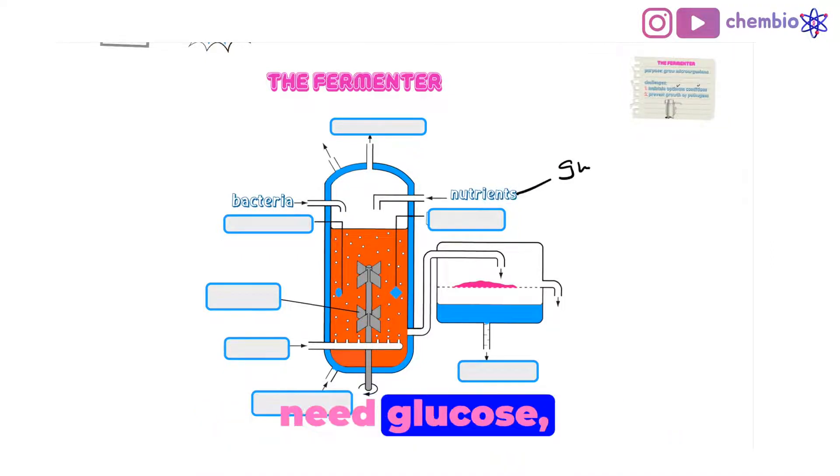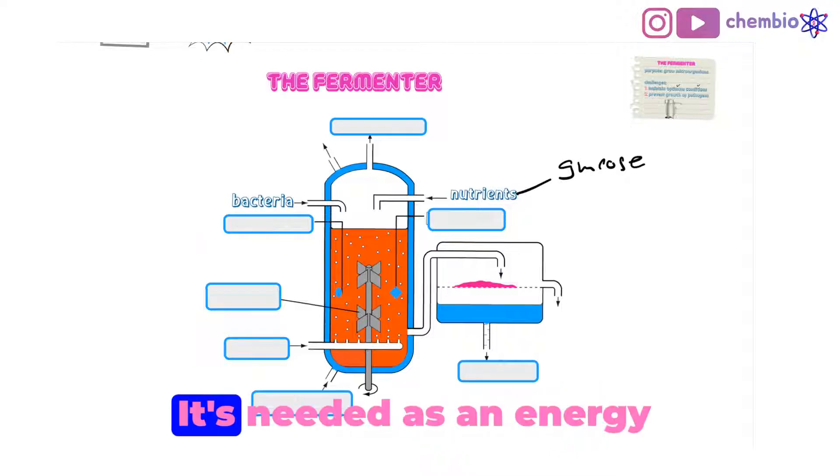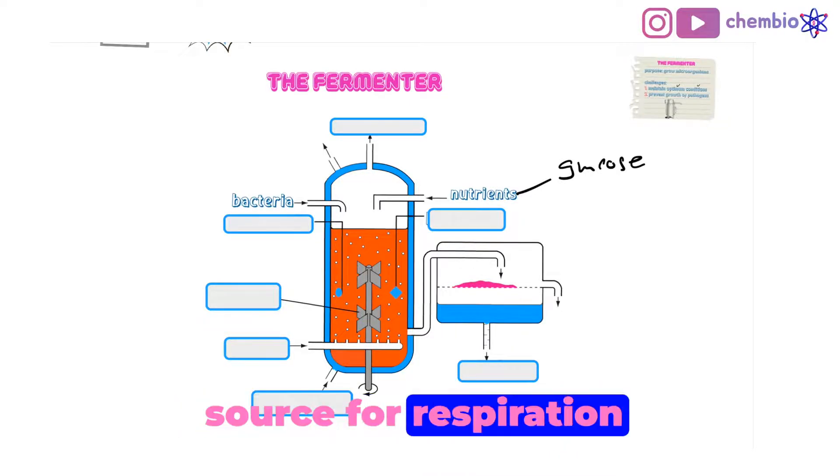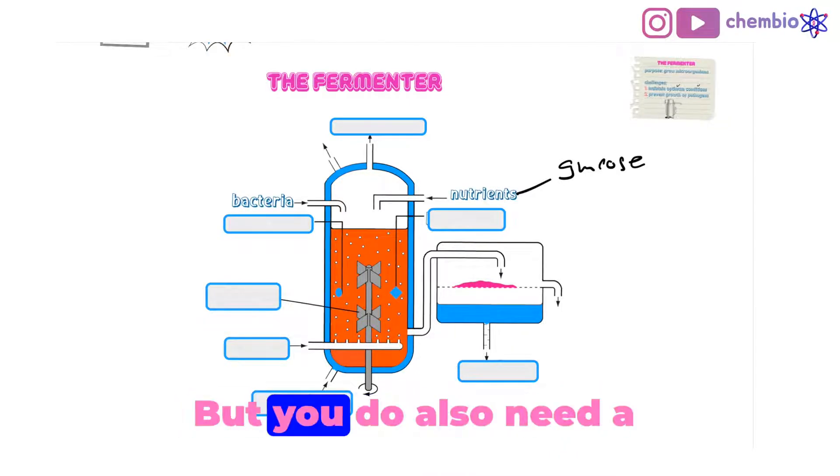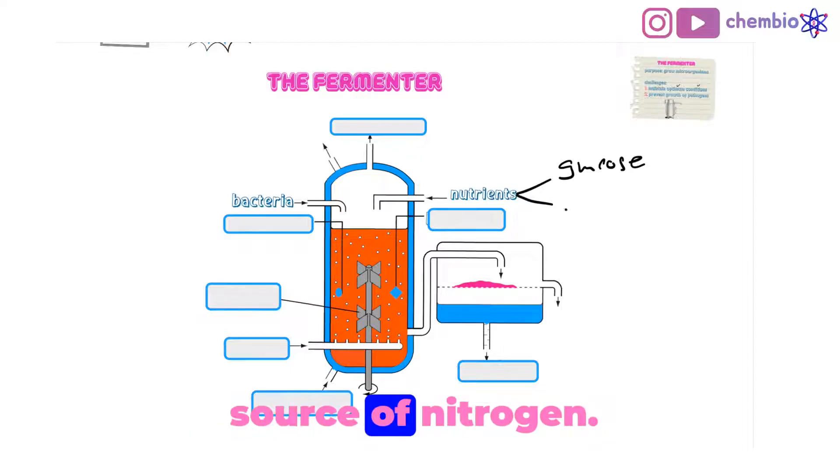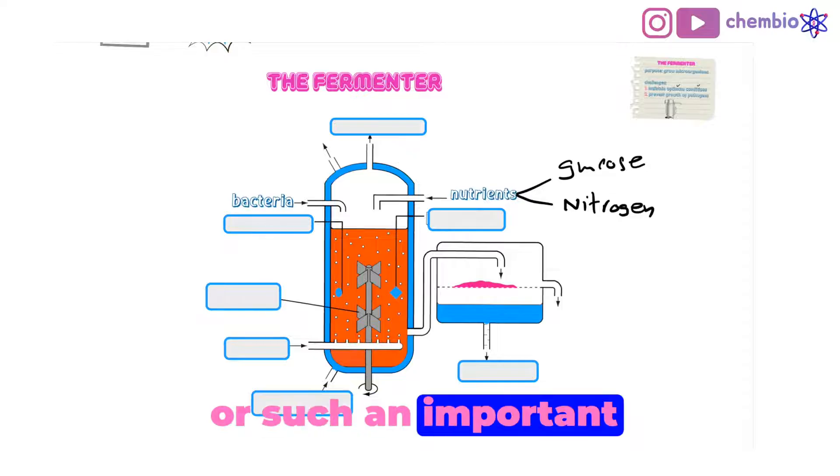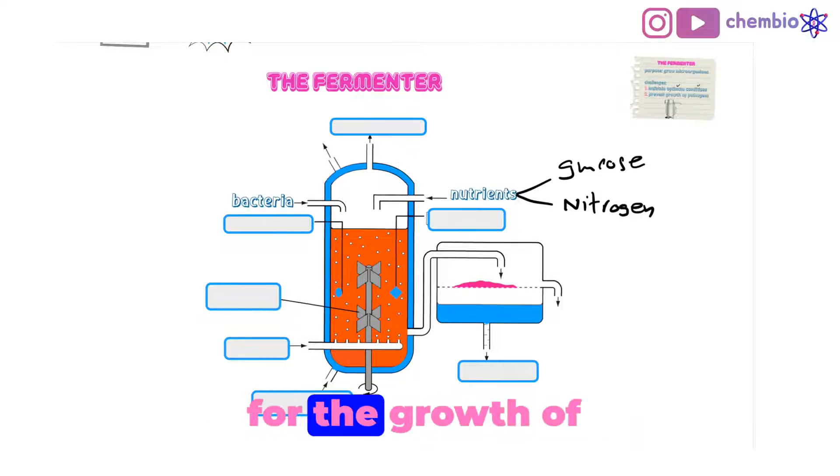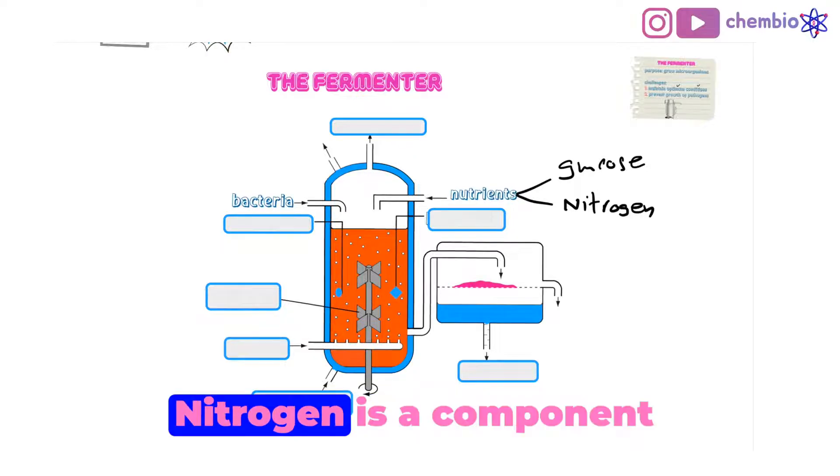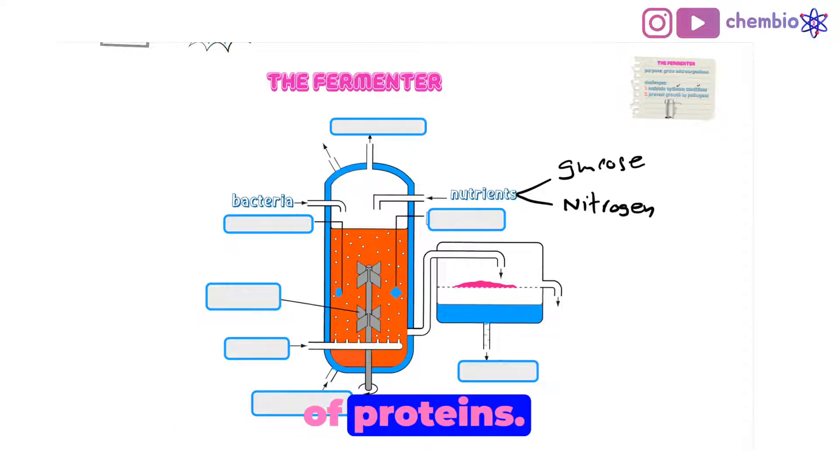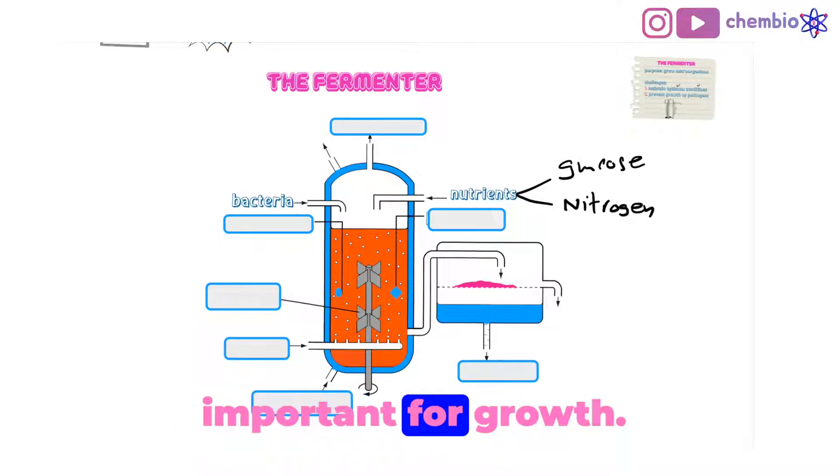You would definitely need glucose because glucose is universal. It's needed as an energy source for respiration for all living organisms. But you also need a source of nitrogen. Why is nitrogen such an important element for the growth of microorganisms? Nitrogen is a component of proteins and proteins are very important for growth.